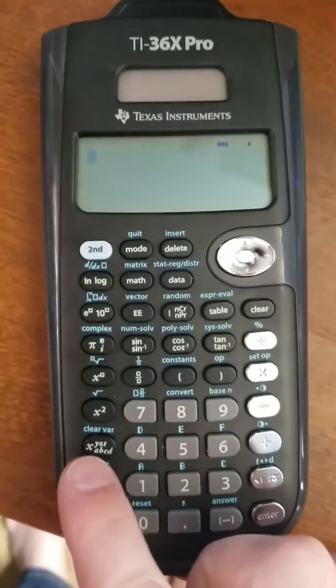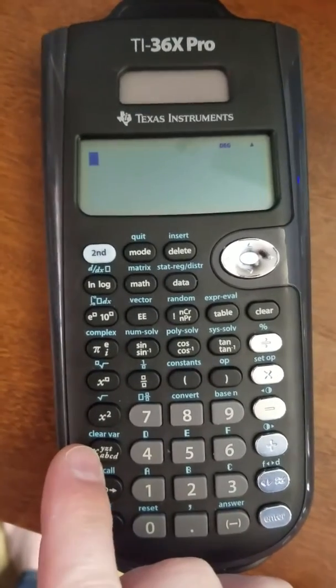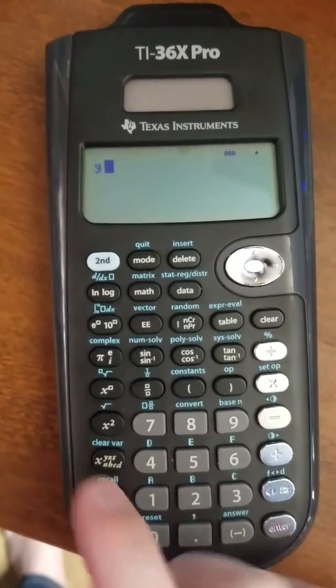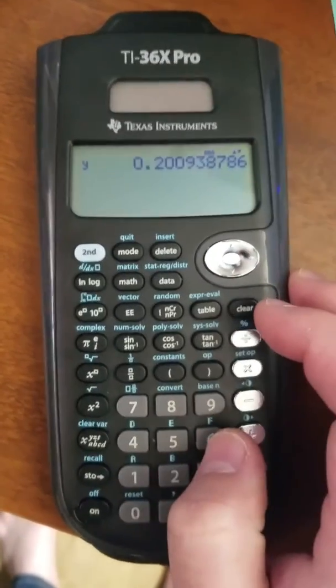So if I hit quit now to recall that, here are all my variables. This button right here, the x, y, z, t, whatever. If I press it twice, it gives me y. And there's that 0.2 value that was just stored.